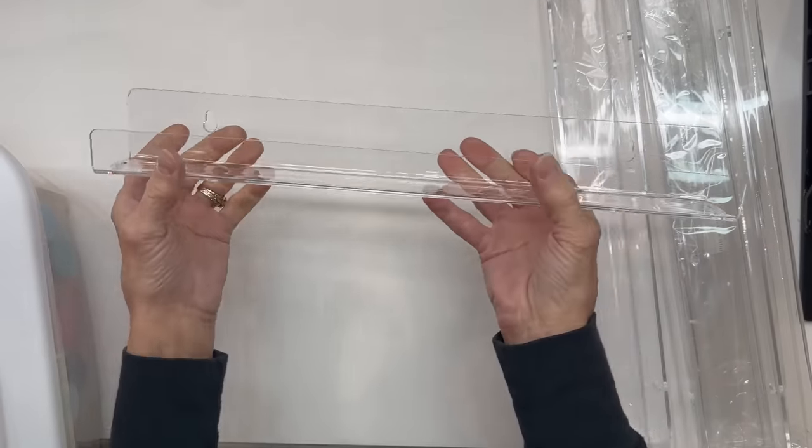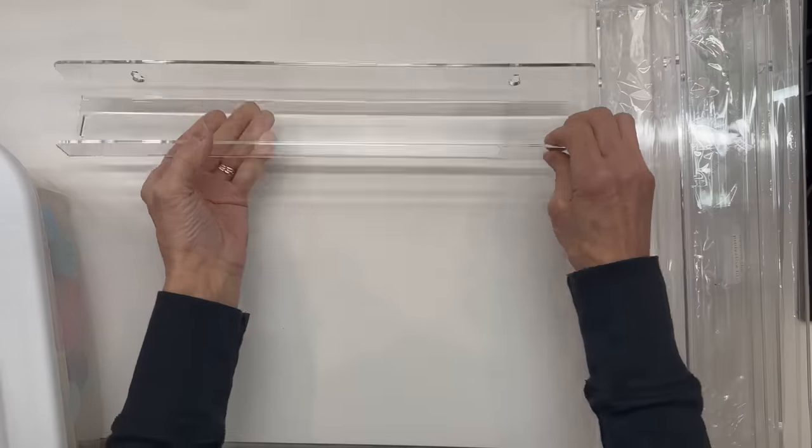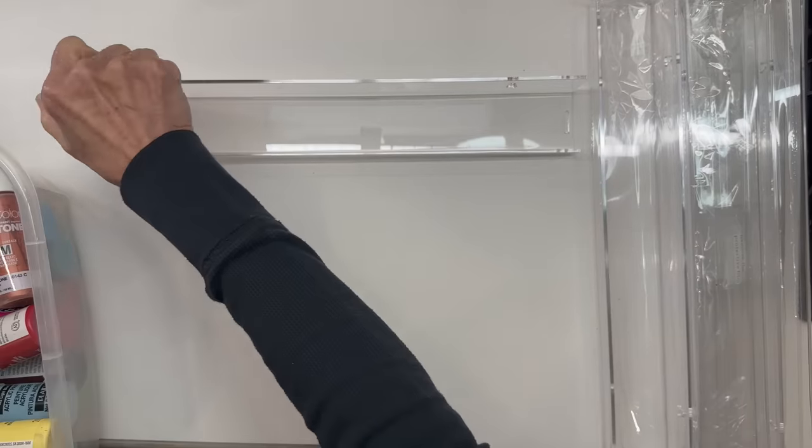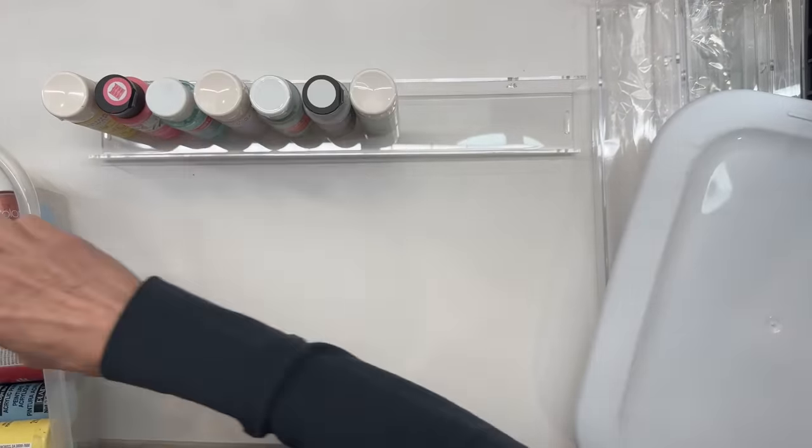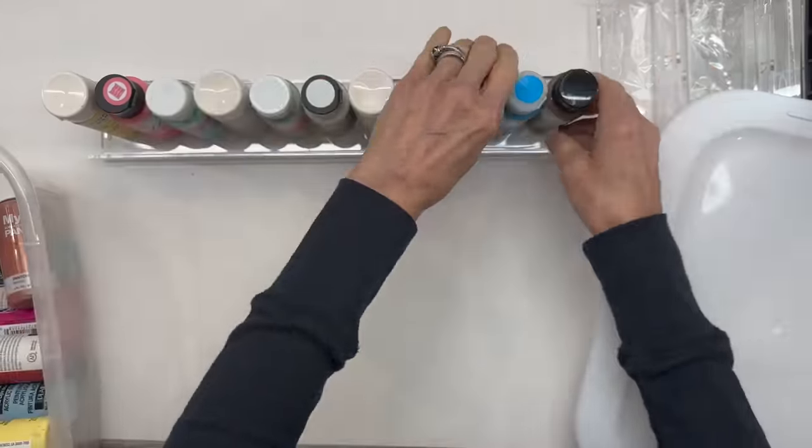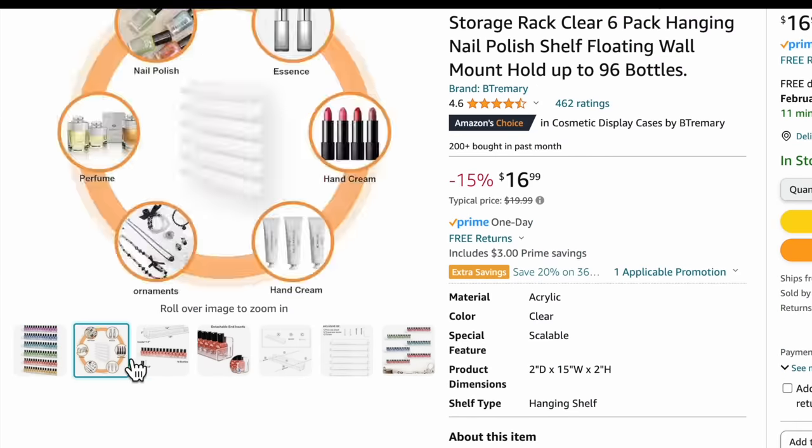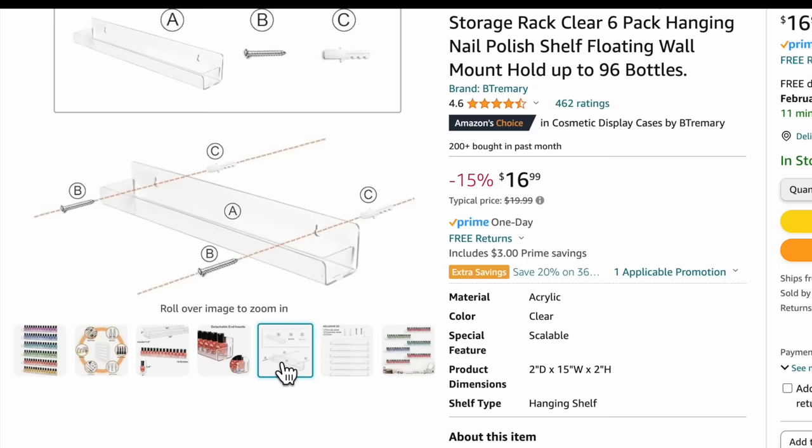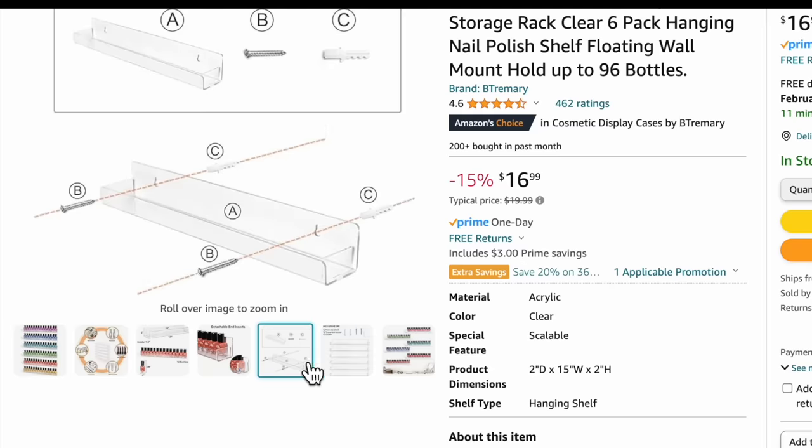For some paint storage I bought these acrylic trays from Amazon. You get six of them in a pack and I'm going to put these on my back wall for paint. They hold 12 bottles of paint and they just install real easily. You don't even have to have a stud in your wall. They're priced right at $16.99 for six. I did go back and buy another set but these would be good for glitter too. Anything that's in a small bottle.